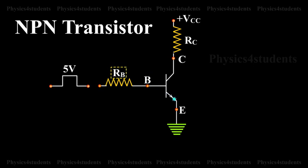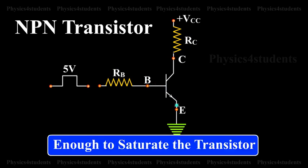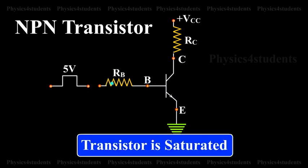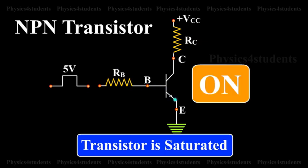The values of RB and RC are chosen in such a manner that the base current flowing is enough to saturate the transistor. When the transistor is saturated, it is said to be on with maximum current flowing.